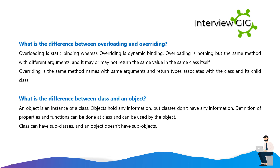What is the difference between overloading and overriding? Overloading is static binding whereas overriding is dynamic binding. Overloading is nothing but the same method with different arguments and it may or may not return the same value in the same class itself. Overriding is the same method name with same arguments and return types, associated with the class and its child class. What is the difference between class and an object? An object is an instance of a class. Objects hold any information but classes don't have any information. Definition of properties and functions can be done at class and can be used by the object. A class can have subclasses and an object doesn't have sub-objects.